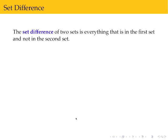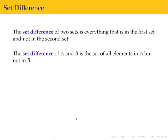Our next set operation is the set difference. The set difference of two sets is everything that is in the first set and not in the second set. So the set difference of A and B is everything in A but not in B.